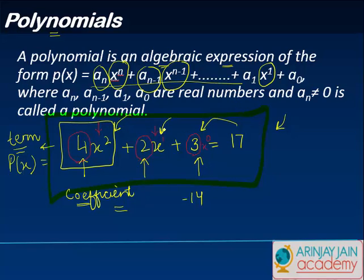So effectively what you have over here is these variables x. So any algebraic expression expressed in the form a_n x to the power n plus a_(n-1) x to the power n minus 1, where a_n etc are real numbers. If you talk about these coefficients they are all the real numbers and a_n is not equal to 0, is called a polynomial.